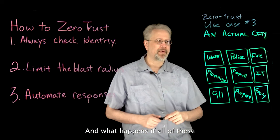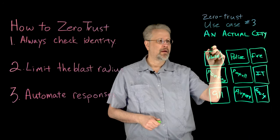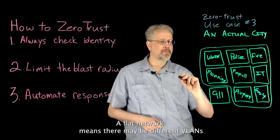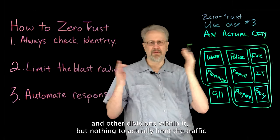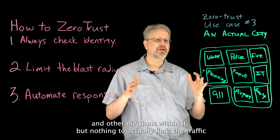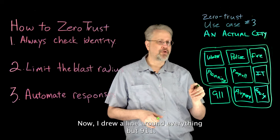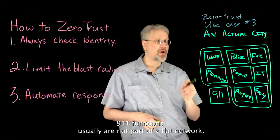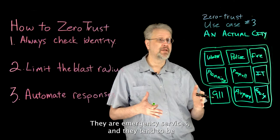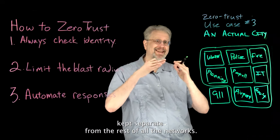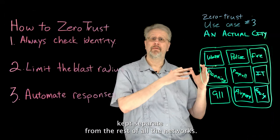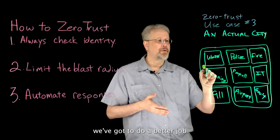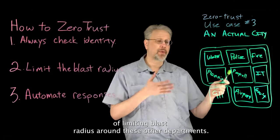What happens if all of these are on a flat network? A flat network means there may be different VLANs and other divisions within it, but nothing to actually limit the traffic from one to the other. I drew a line around everything but 911. 911 functions usually are not part of a flat network — they are emergency services and tend to be kept separate. That's segmentation, and it helps to protect.